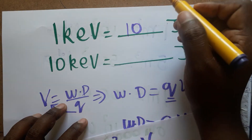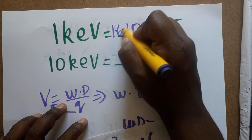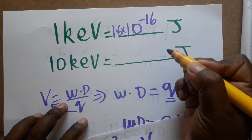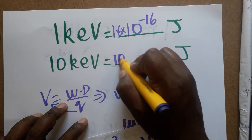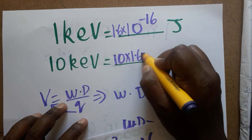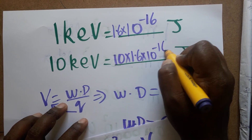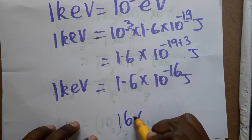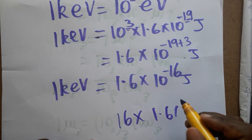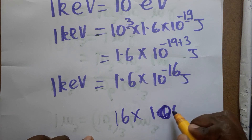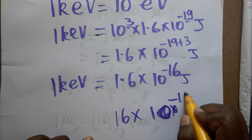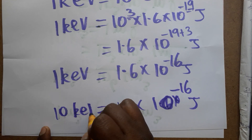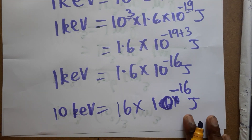For example, 10 kilo electron volt: 10 into 1.6 into 10 to the power minus 16, which gives 16 into 10 to the power minus 16 joules. So 16 into 10 to the power minus 16 joules is the answer for 10 kilo electron volt. If you like my channel, please subscribe.